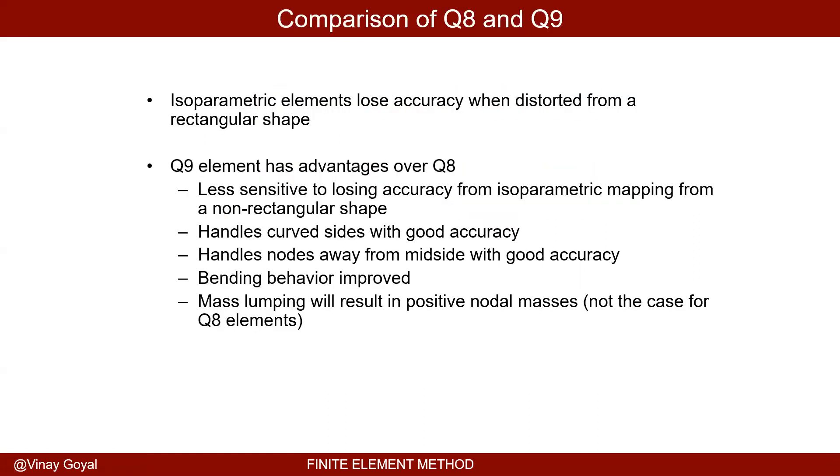The comparison of Q8 and Q9. Isoparametric elements lose accuracy when distorted from a rectangular shape. The Q9 element has advantages over Q8. It's less sensitive to losing accuracy from isoparametric mapping from a non-rectangular shape. It handles curve sides with good accuracy, handles nodes away from the mid-side nodes with good accuracy, and the bending behavior is improved. Also, the mass lumping will result in positive nodal masses, which is not the case for Q8. So there's some great advantages of Q9 over Q8 elements.